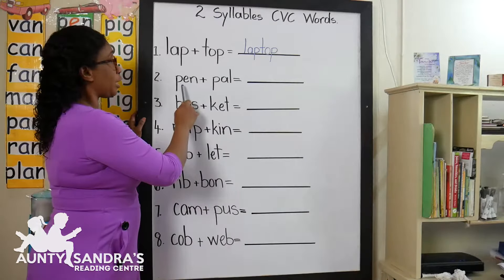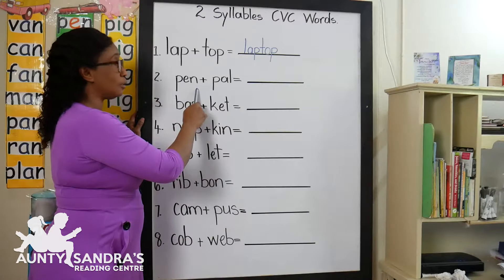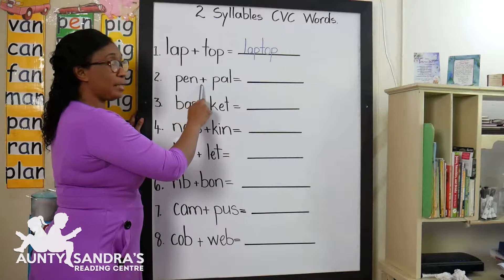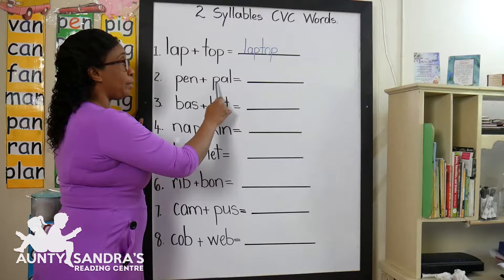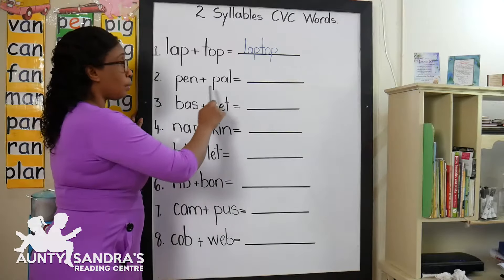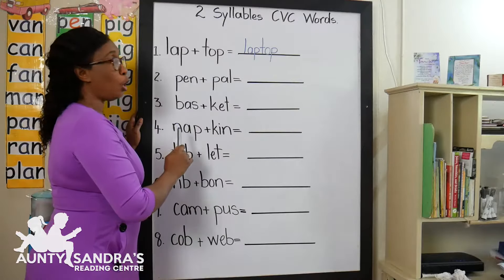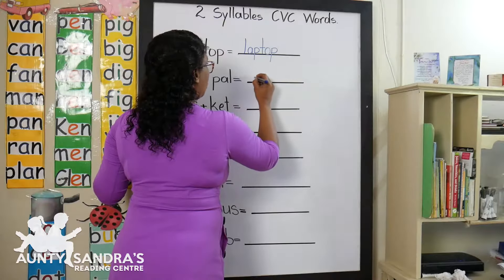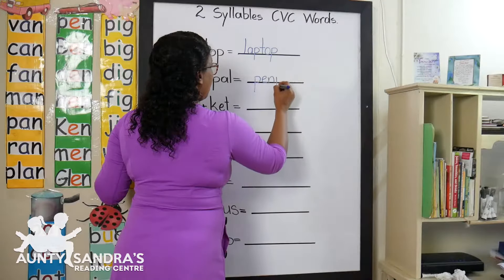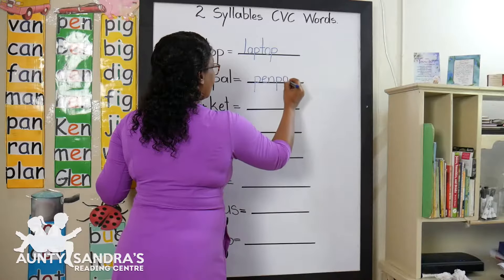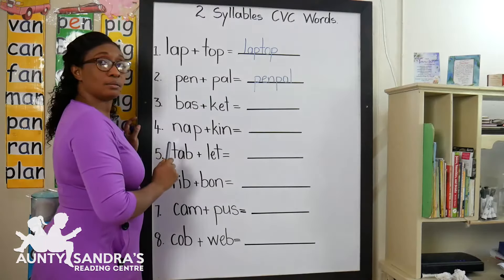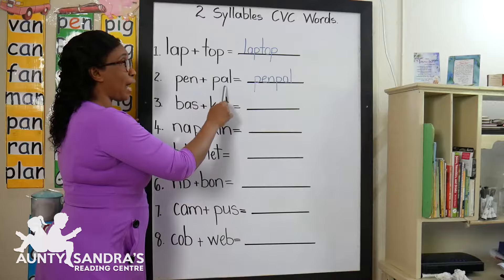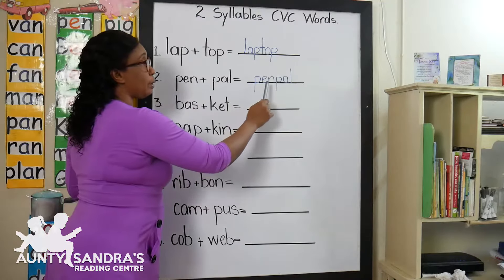The next one is P-E-N, Pen. That's the first syllable. P-E-N, Pen. The second syllable is P-A-L, Pal. Now we are going to join the two syllables together and we are going to get P-E-N-P-A-L. What is the word? P-E-N-P-A-L. So we join Pen and Pal together and we get Penpal.